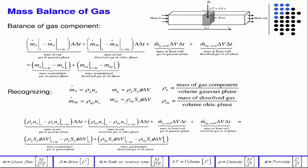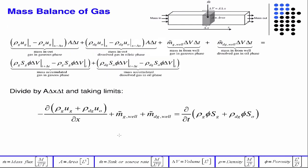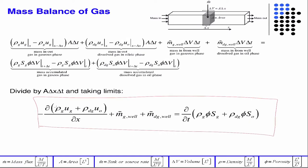Then we use all the standard definitions. The density of gas is the mass of the gas component in the gaseous phase, and the density of dissolved gas is the mass of dissolved gas in the volume of the oleic phase. Going back one previous slide, the total density in the oleic phase must equal the density of the dissolved gas plus the density of the oil.